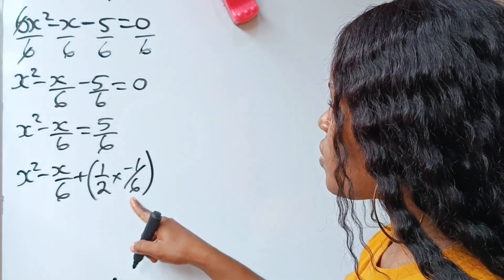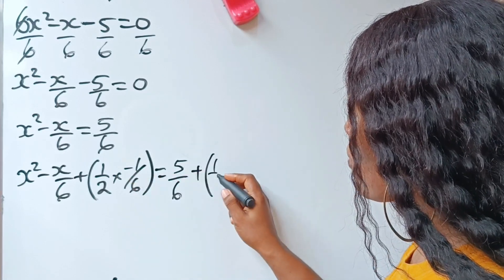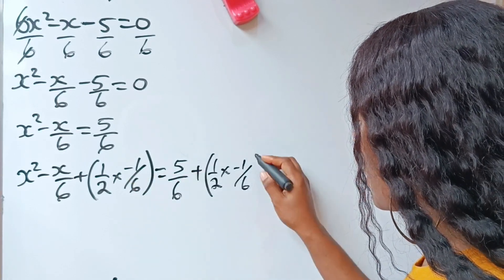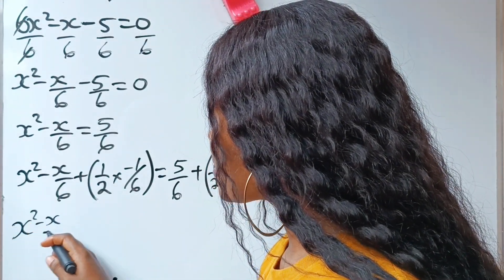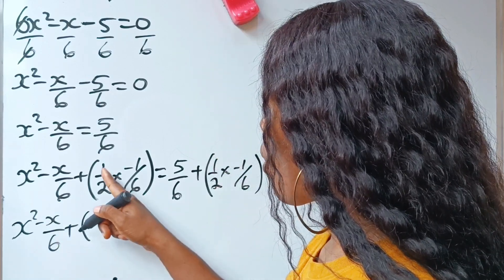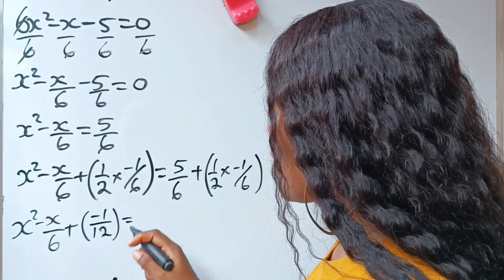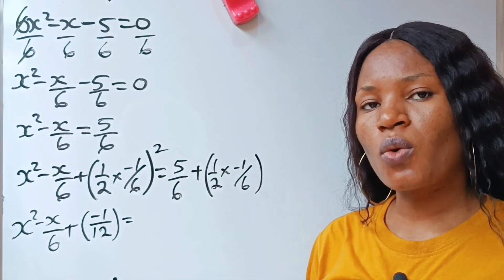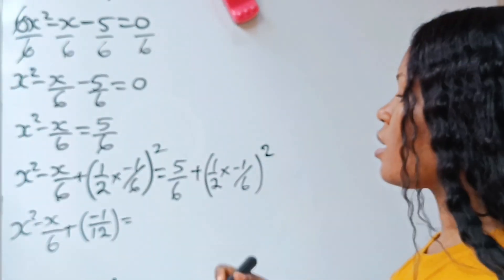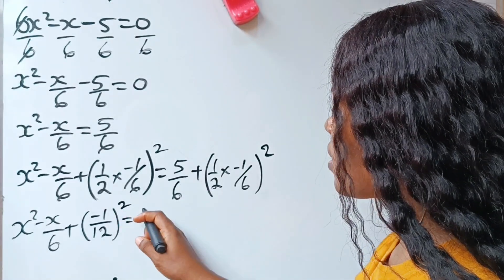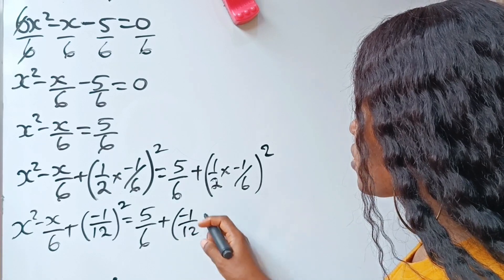I have added half of the coefficient of x to the left side, and I am also going to add the same thing to the right side. So we have x squared minus x over 6 plus the term, where 1 times minus 1 gives us minus 1 and 2 times 6 gives us 12, so that is minus 1 over 12, squared. This is equal to 5 over 6 plus minus 1 over 12 squared.